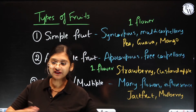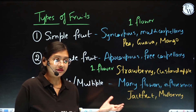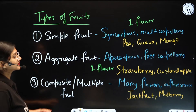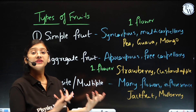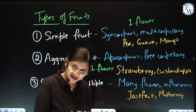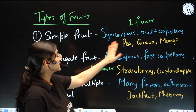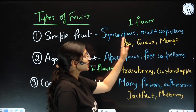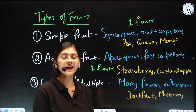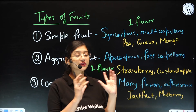Now coming to different types of fruits depending on the pistil. Coming to simple fruits — simple fruits have been developed from syncarpous, multicarpellary flowers, where the carpels are fused but many. Examples are pea, guava, and mango. Here in one flower, the carpels are going to be many and they are fused.